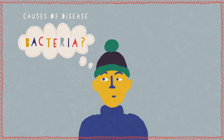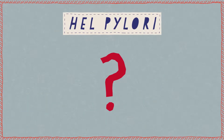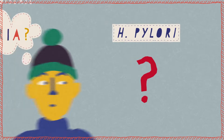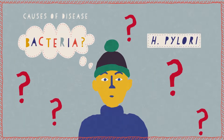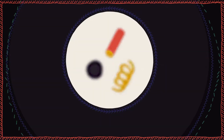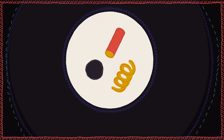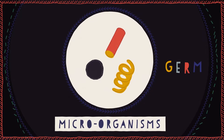Do you ever wonder what causes different sorts of disease? Harmful types of bacteria like Helicobacter pylori, also called H. pylori, are one of several types of tiny life forms that can infect people and cause disease. Bacteria are so tiny that we need a microscope to see them. Scientists call such tiny life forms microorganisms, but many people often call them germs.